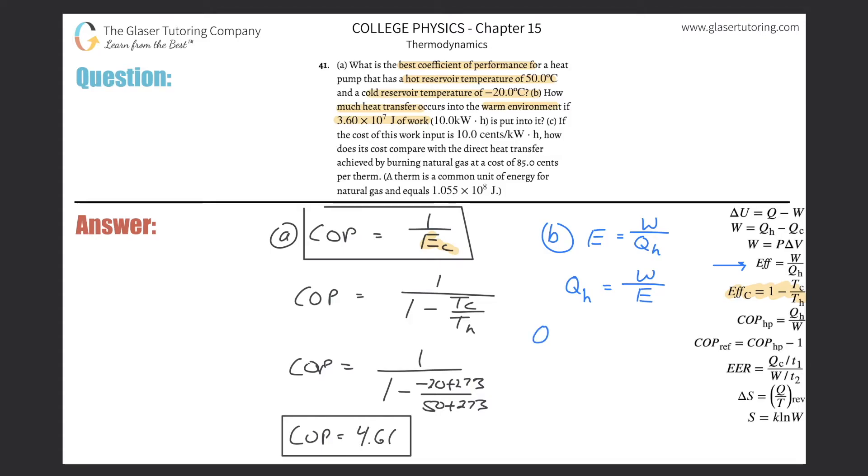And then working this on out to get those temperatures in there, this is now simply going to be just work divided by 1 minus the temperature of the cold divided by temperature of the hot. And all I did was a simple substitution, just like I did in the prior part here. And now we just have to plug in the values. So the work here was 3.6 times 10 to the 7th, then all divided now by 1 minus temperature of the cold reservoir was negative 20 plus the 273, divided by then 50, plus the 273.